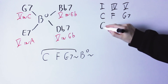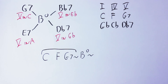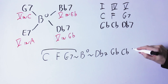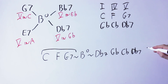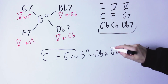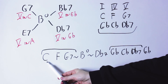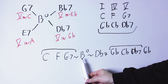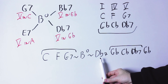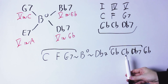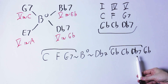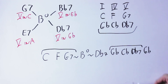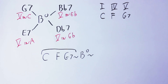Let's see the same going from the key of C to the key of G flat. So I'm going to play C, F, G7, then B diminished, then D flat 7, and from there I play G flat, C flat, D flat, G flat in the key of G flat. Again, a very smooth change between the key of C and the key of G flat.